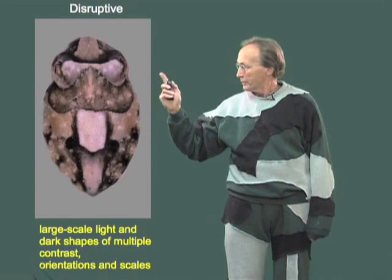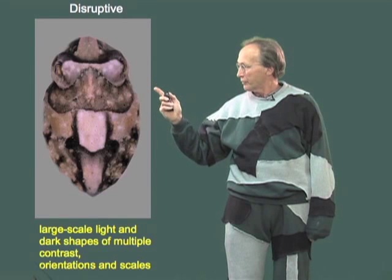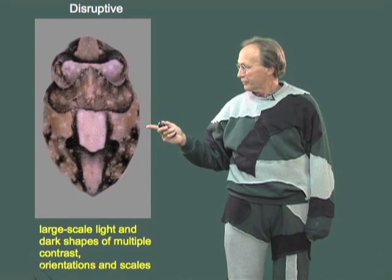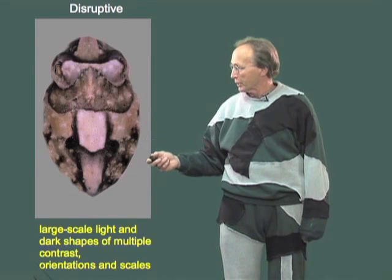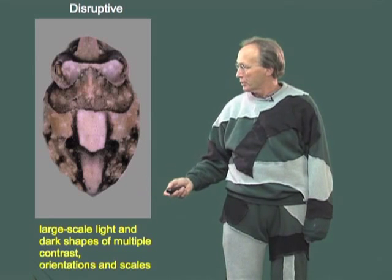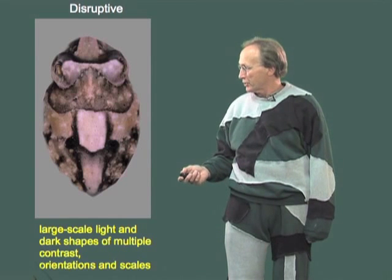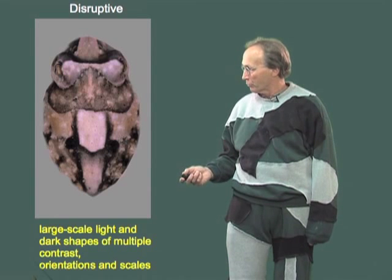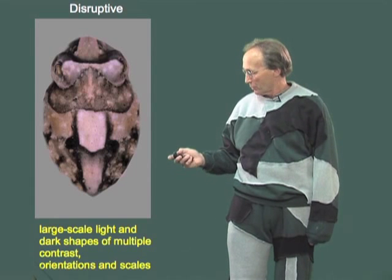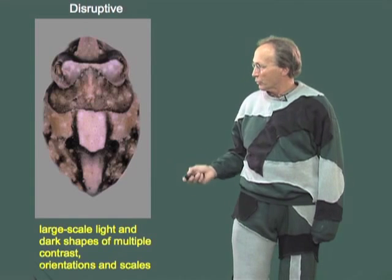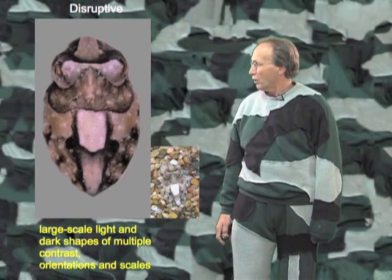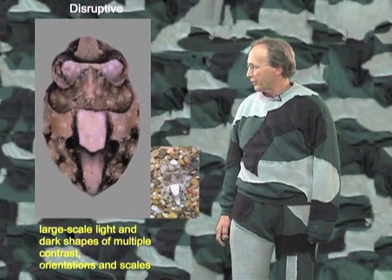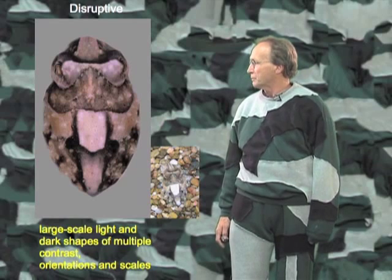On a background with similar features, mottled coloration creates nice blending for camouflage. For disruptive coloration, we have a very different layout: large-scale, high-contrast, light and dark components, with multiple orientations and scales — partly to break up the recognizable form, but as shown on the right background, also creating a fair amount of background matching as well.